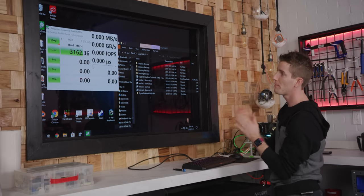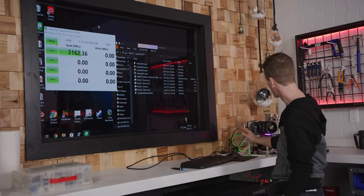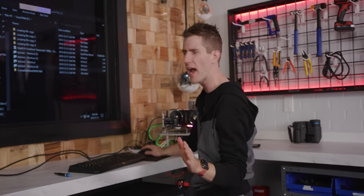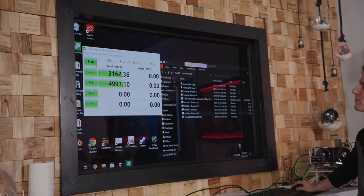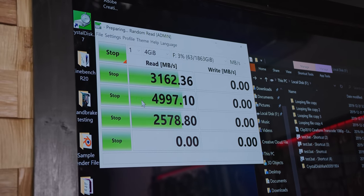Before we do that, let's start with a baseline Crystal Disk Mark run here with the drive just in a not quite idle state because we just copied some files, but basically. Dang, these PCI Express Gen 4 drives are fast. Five gigabytes a second!